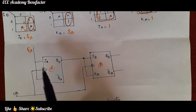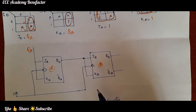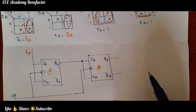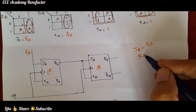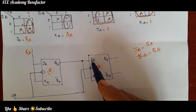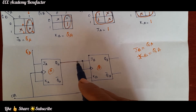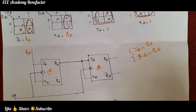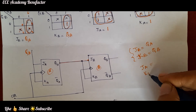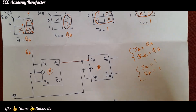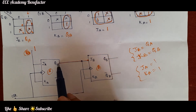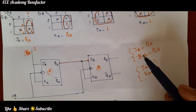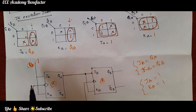As it is a synchronous counter, we have given the same clock to both flip-flops and it is negatively edge triggered, so we have added a bubble to it. Same clock is connected to both. JA and KA are connected to 1 since JA=1 and KA=1. JB and KB are connected to QA based on the equations obtained after simplifying the K-maps.